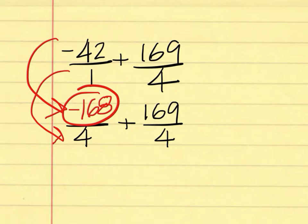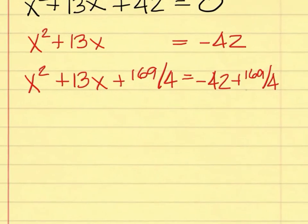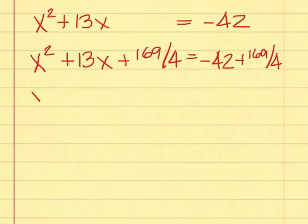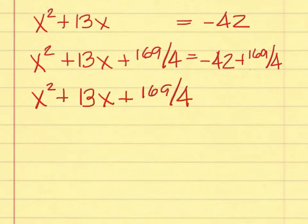What is the next step to add these two fractions? A student answers: you add negative 168 and 169 to get 1. That's right — it would be 1 over 4. So we can rewrite: x squared plus 13x plus 169 over 4 equals 1 over 4.